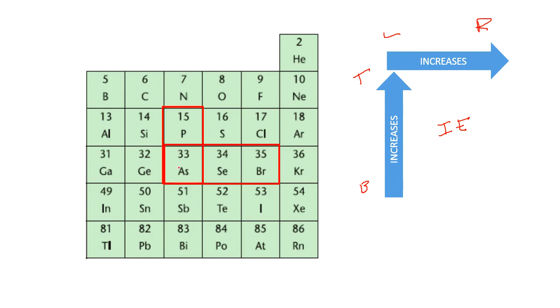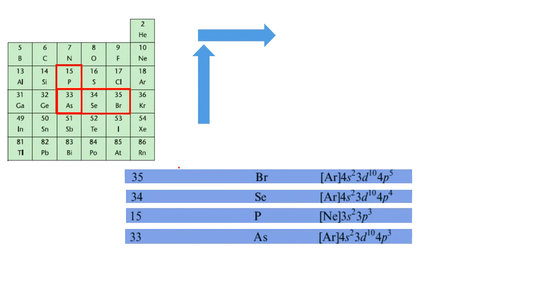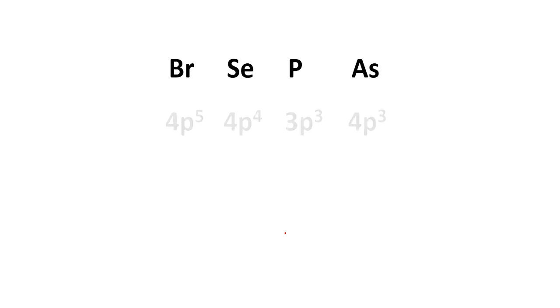We have to consider the electronic configuration. For bromine, the outer electron will be 4p5. For selenium it is 4p4. For phosphorus it is 3p3. And for arsenic it is 4p3. Let us write only the outer electrons.